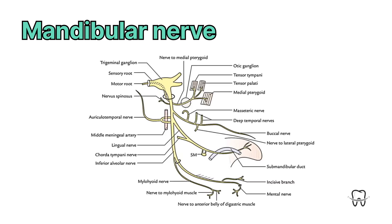The trick to remember all of this is learning the diagram. In the diagram, all the names are present — the anterior division, posterior division, and main trunk branches — so you can see and write them easily and remember them easily.